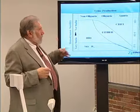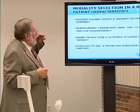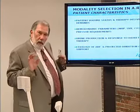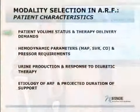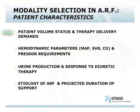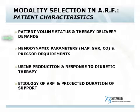With that as a background, if the patient's characteristics are what's most important, what are those characteristics? Volume status is an important issue — the more someone's overloaded, the more you probably want to go towards continuous therapy. Therapy delivery demands also matter: how aggressive do you want to be in controlling urea? Are they very catabolic? Can you control that with intermittent, or do you need continuous therapy for urea control?